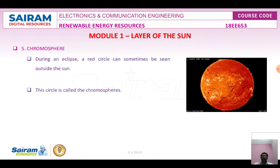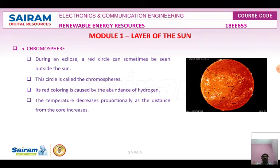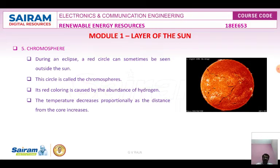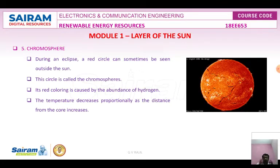The chromosphere can only be seen during a solar eclipse, as a red circle on the outside of the sun. It is red in color due to the abundance of hydrogen. From the center of the sun to the chromosphere, temperature decreases proportionally as distance from the core increases. However, the chromosphere's temperature is nearly 7,000 Kelvin — hotter than the photosphere.